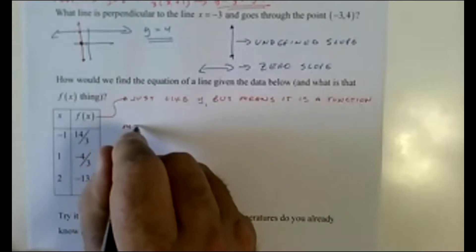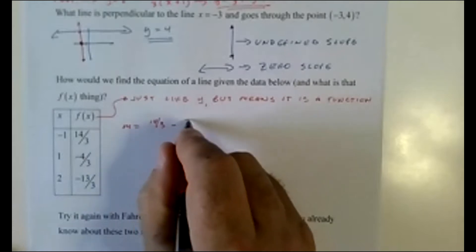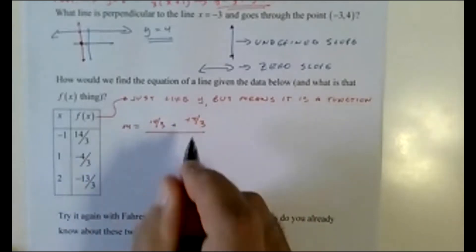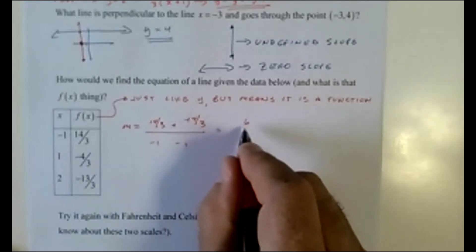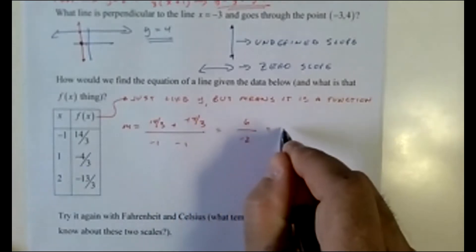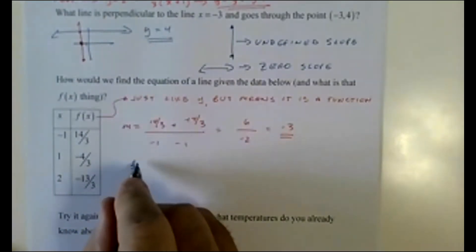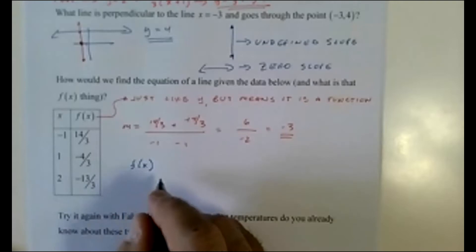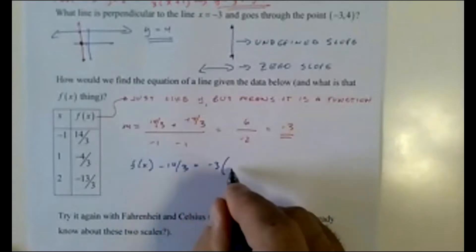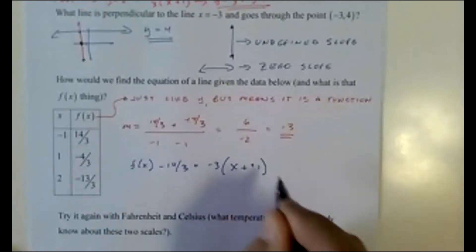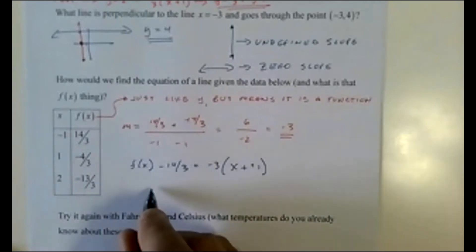Let's find slope with f(x) notation. m equals (14/3 minus negative 4/3) over (negative 1 minus 1) equals 6 over negative 2, which equals negative 3. Back to point-slope: f(x) minus 14/3 equals negative 3 times (x minus negative 1), which is x + 1. You'll need to get used to that shortcutting.